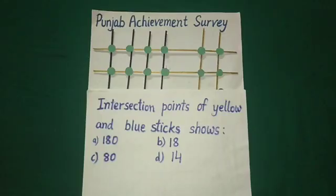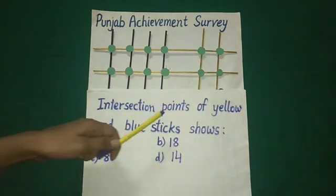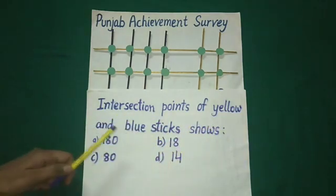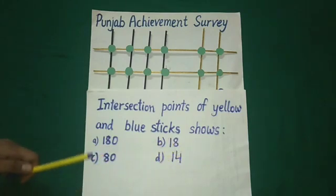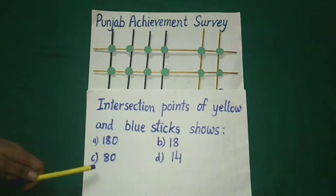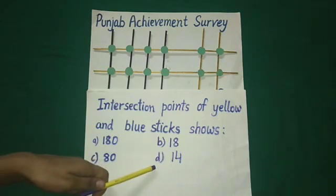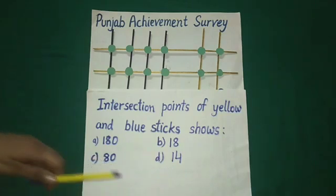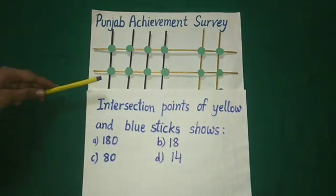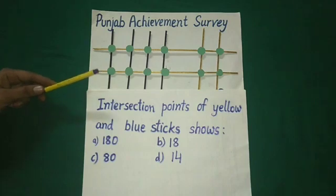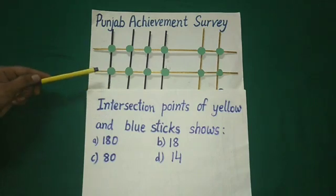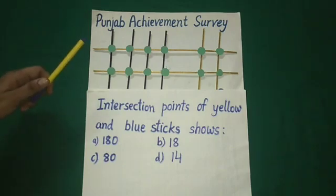Now students, time for a test question. The question is: intersection points of yellow and blue sticks show — four options are given. Option A is 180, B is 18, C is 80, and D is 14. We have just established that blue sticks represent tens.